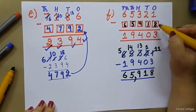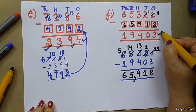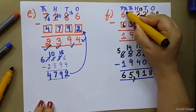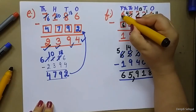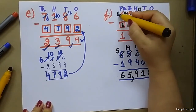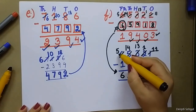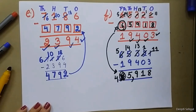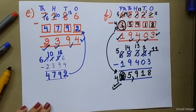Let's quickly check whether our answer is correct. 1 minus 8 — borrow: becomes 11, 11 minus 8 is 3. 1 minus 1 is 0. 3 minus 9 — borrow: becomes 13, this becomes 4; 13 minus 9 is 4. 4 minus 5 — borrow: becomes 14, 14 minus 5 is 9. But 5 minus 6 — wait, I caught a mistake! 5 minus 4 is 1. So the correct answer should have 4 here, and 5 minus 4 is 1. Now it will be correct. Thank you.